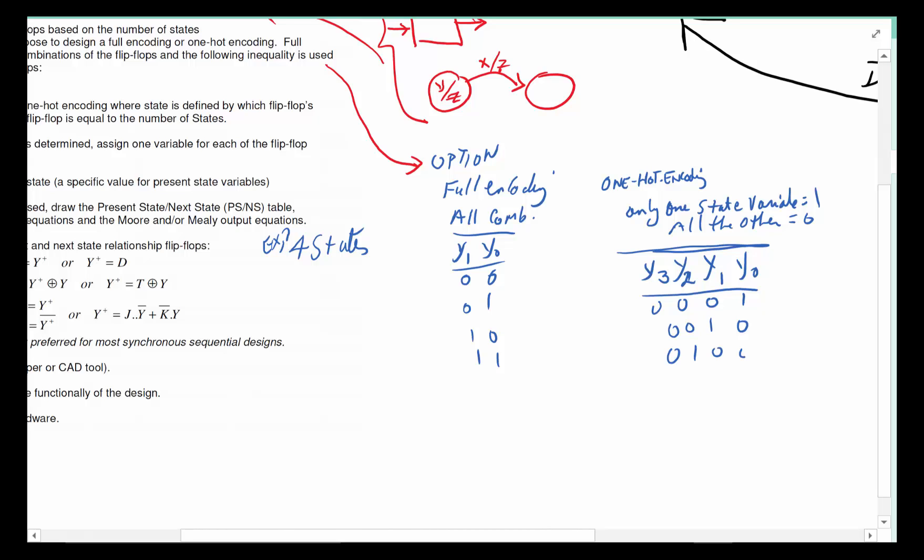You might ask at this point, why would I want to do it? It sounds like such a waste. Well, the practicality is that if my output can be directly tied to Y0, so when Y0 is high I can take an action, I don't need to come up with any combinational logic to create the output.